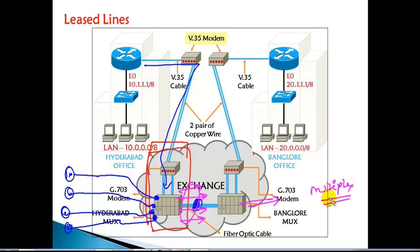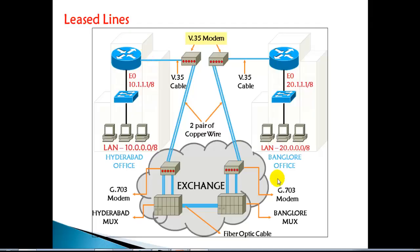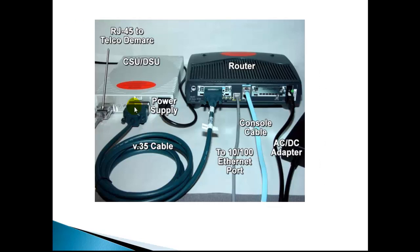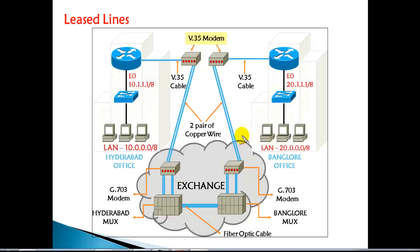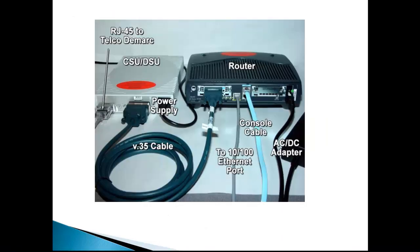In the service provider network we have nothing to do, because it's not in our control. Our job is on Router 1, Router 2, and within our LAN. We are just trying to understand how the wire connection is built by the service provider when taking a dedicated leased line. That is how the WAN connection is built by the service provider, with many devices involved: modems, MUXes, and routers.